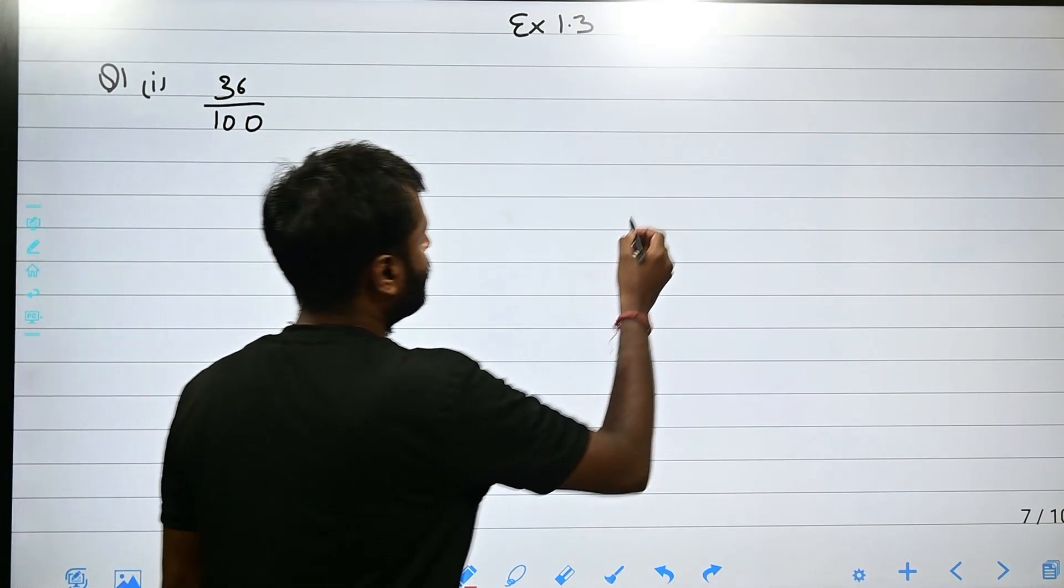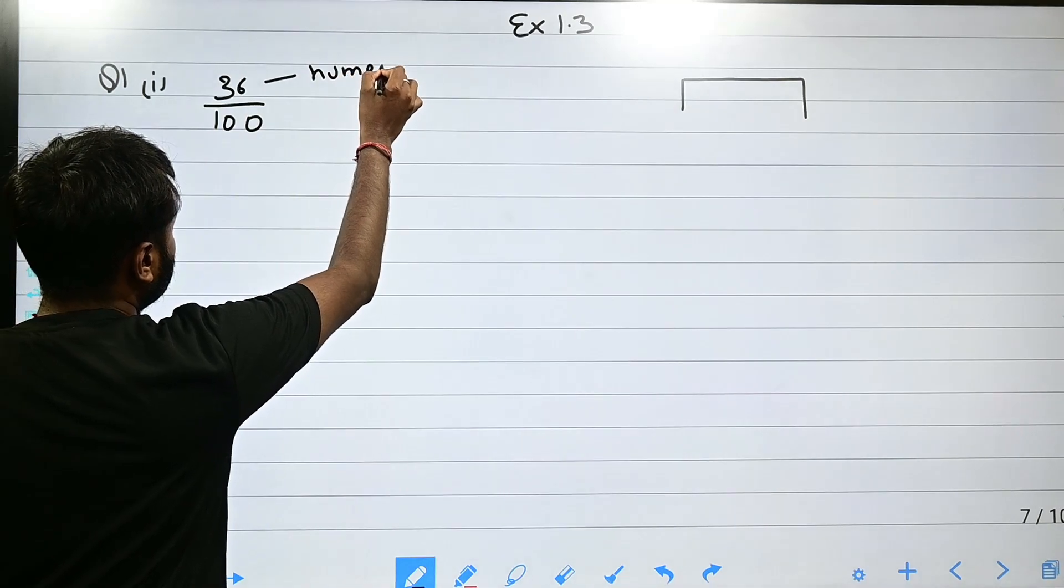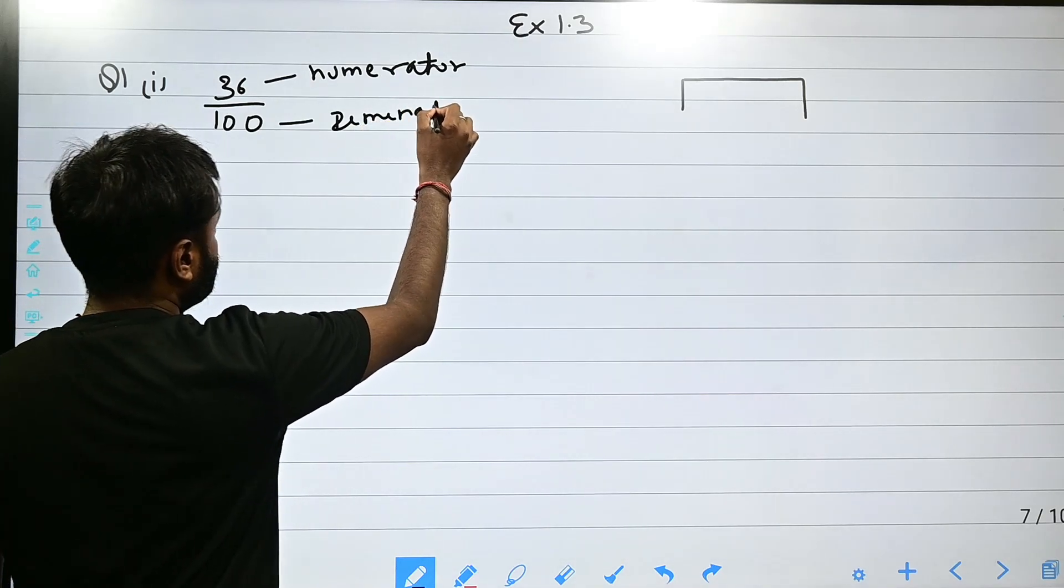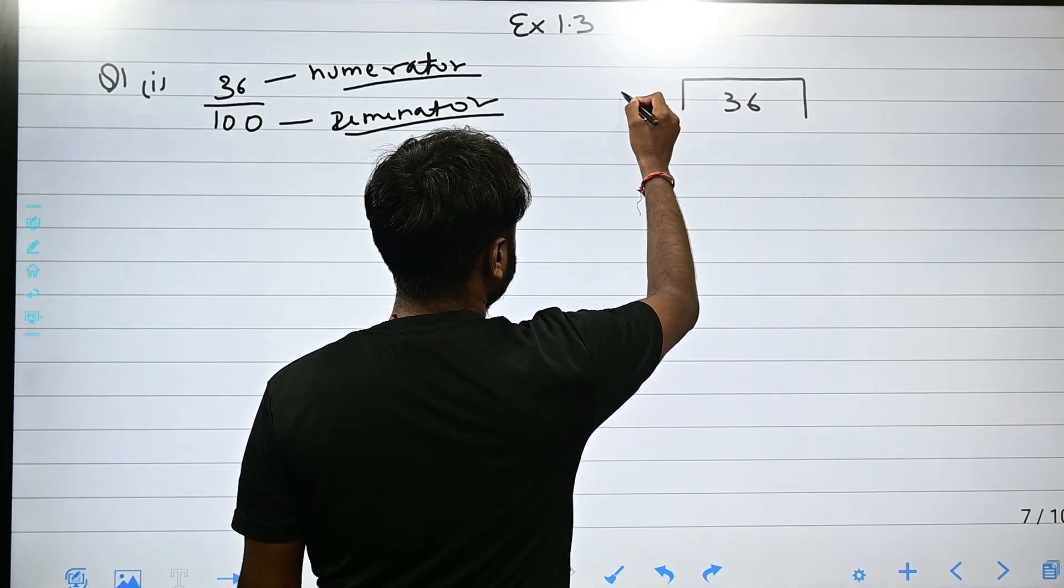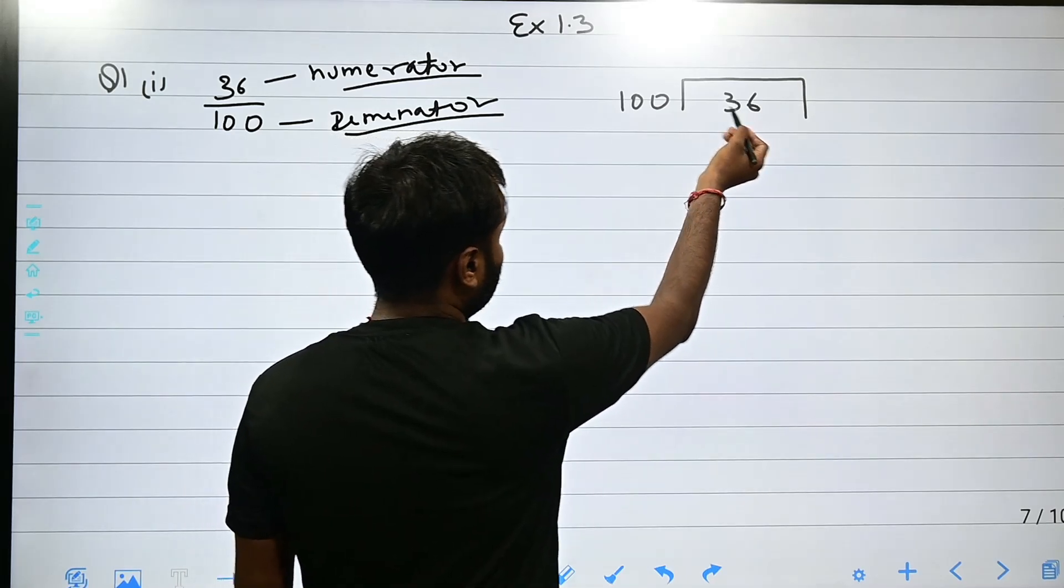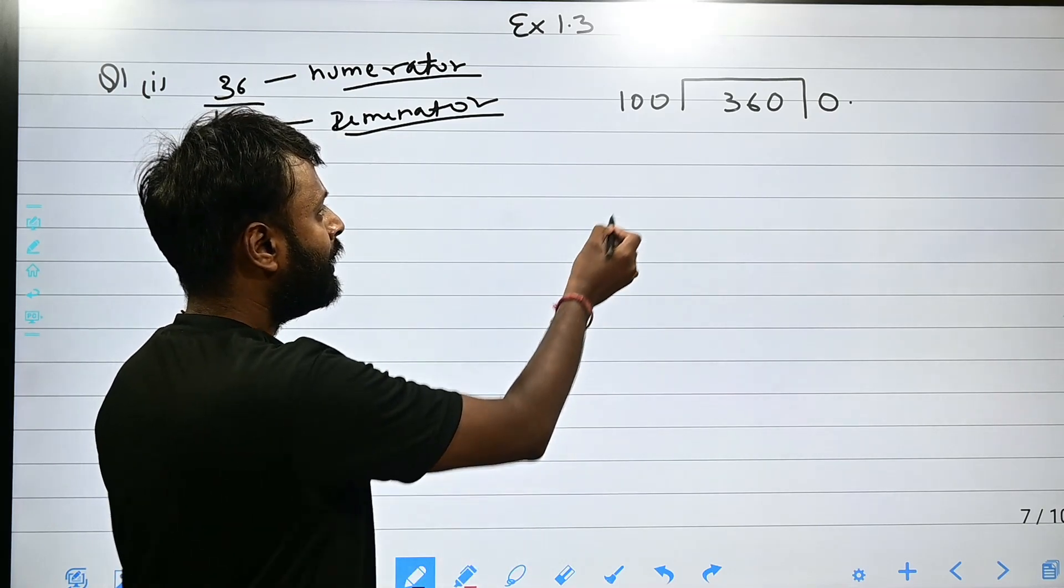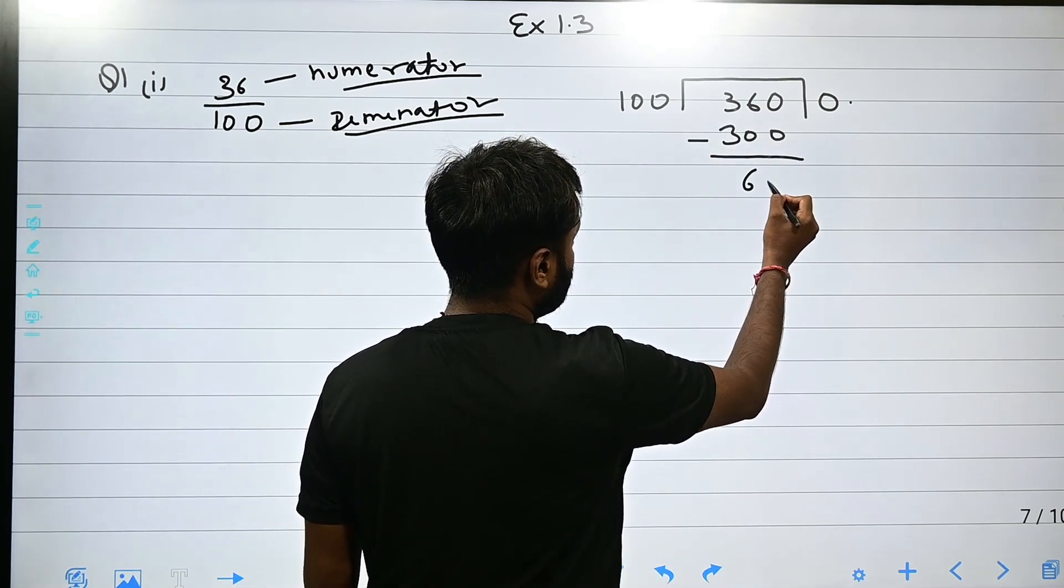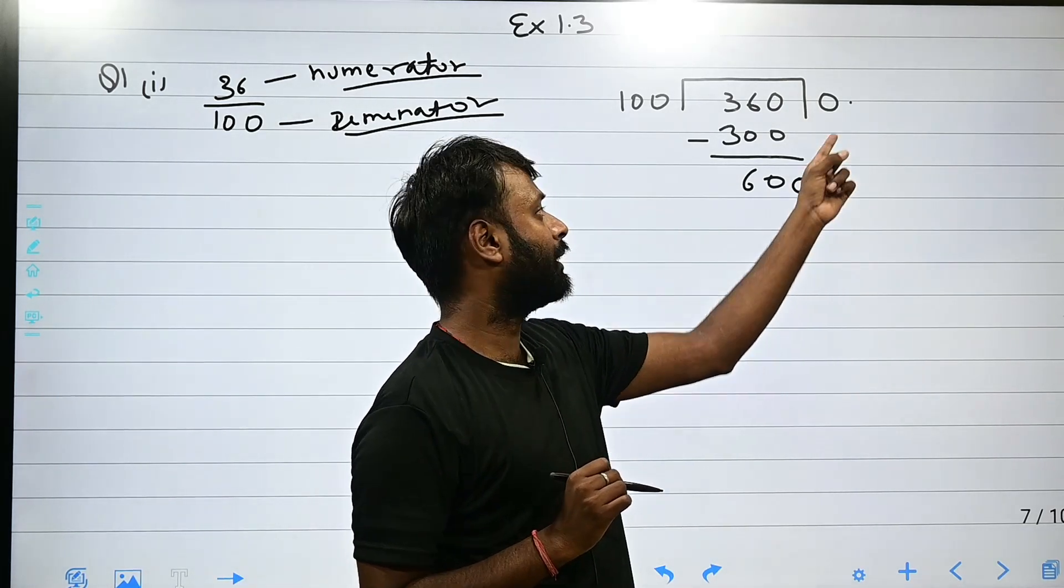Whenever we divide, if we have a fraction number, the upper one is the numerator and the lower one is the denominator. The denominator divides the numerator. Now divide: 100 into 36, we have 0, then decimal, and we have 0. We will subtract, now we will get 60.